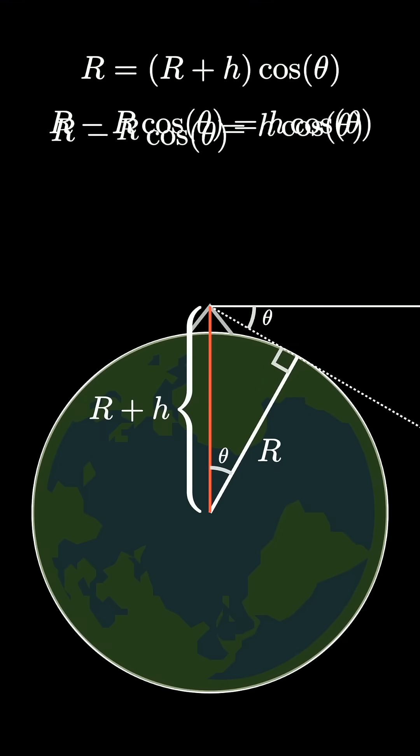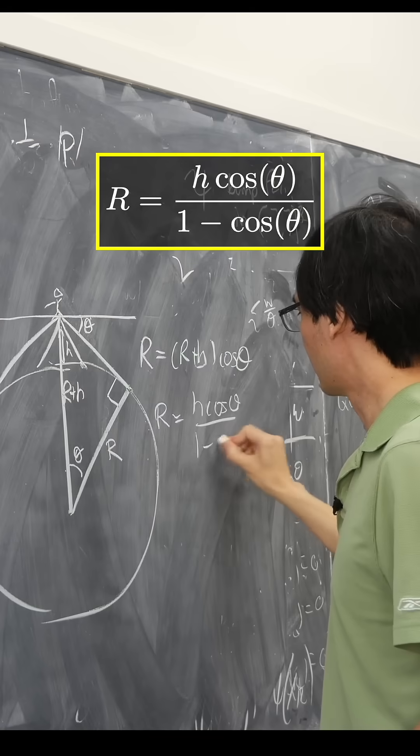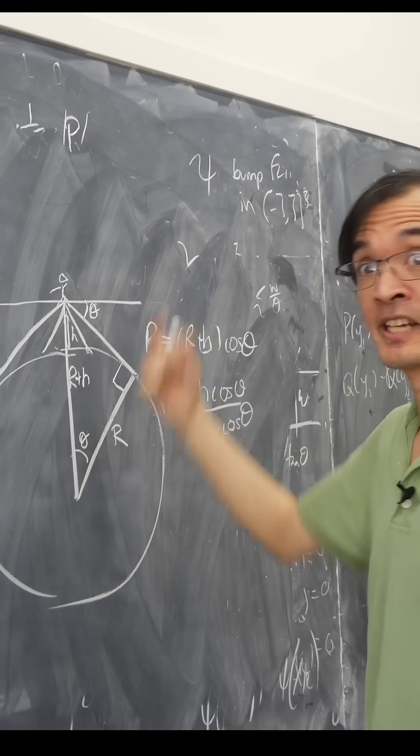You can compute the radius using a formula involving h and cosine. Then you can compute the radius of the Earth from the height of the mountain and the angle of declination.